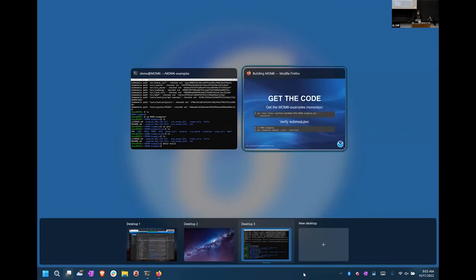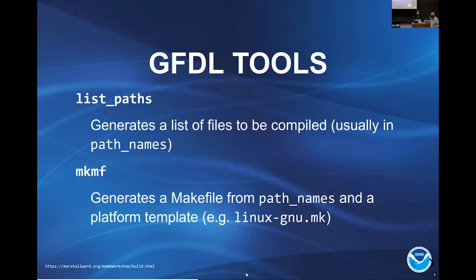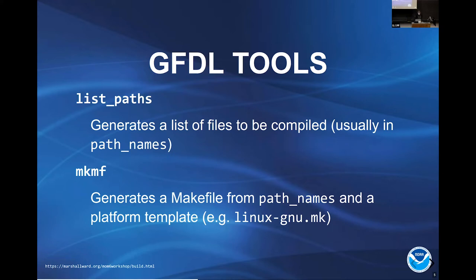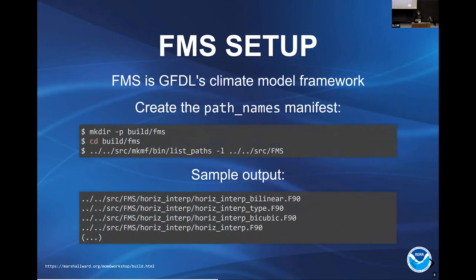The two quirks about building on this machine involve two tools that GFDL has called listpads and mkmf. The first is kind of a glorified find command — it just creates a list of all the files you're going to compile. The second is an ancient Perl script that generates a Makefile out of the list of files. These tools are very much from the 90s but they are the official way we build the model here.